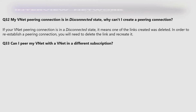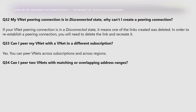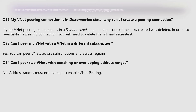Can I pair my VNet with a VNet in a different subscription? Yes — you can pair VNets across subscriptions and across regions. Can I pair two VNets with matching or overlapping address ranges? No — address space must not overlap to enable VNet peering.